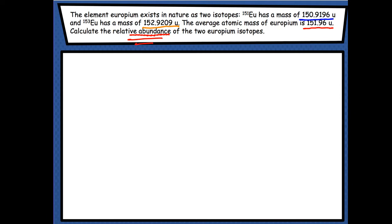OK, so the general expression is the average mass is going to equal the percentage of the first isotope, which we don't know, times EU-151, times the mass of EU.